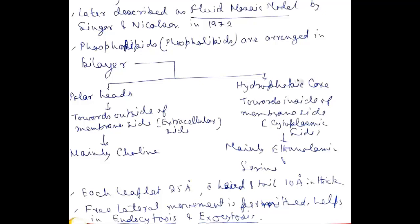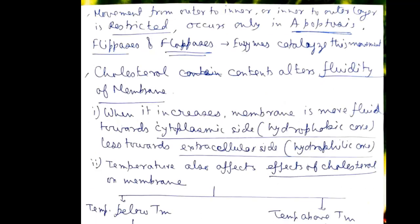Free lateral movement is permitted in the Plasma Membrane. It helps in endocytosis or exocytosis. But movement from outer to inner or in the reverse direction is restricted. It occurs only in apoptosis or programmed cell death. Flippases and floppases are the enzymes that catalyze this movement.